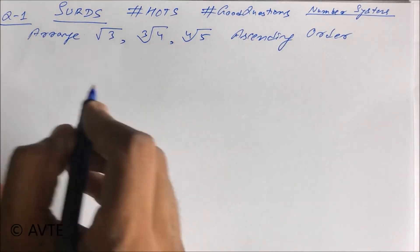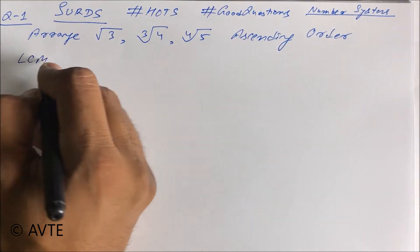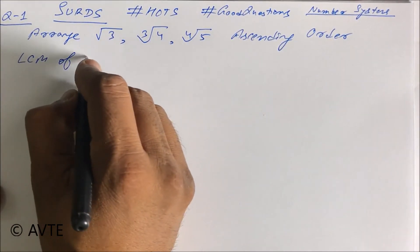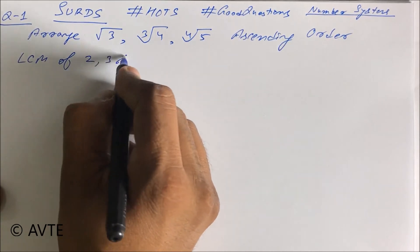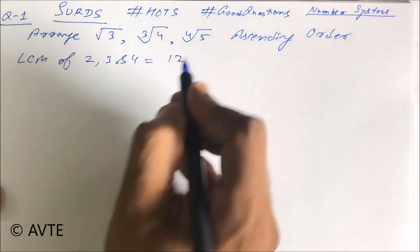So first we have to take the LCM of the orders. LCM of 2, 3, and 4, that is 12.